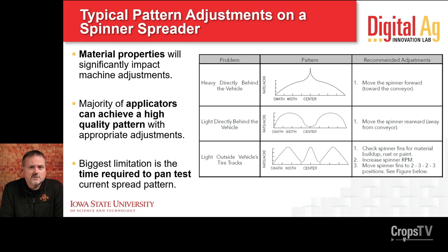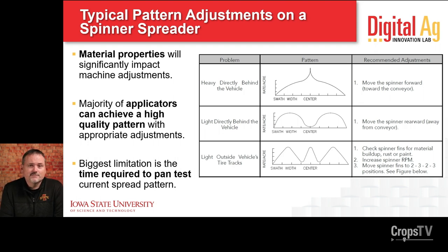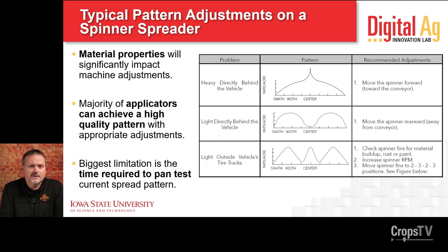Over the last handful of years we've seen all of these types of issues pop up within Iowa in terms of insurance claims or complaints about product quality and application. From a common perspective, the things that most commonly show up are something like the first pattern, where we're not able to spread material far enough. Maybe we're trying to spread a swath width of 100 feet but we can only get the fertilizer 90 feet, so there's a 10-foot gap between swaths with low application — that's been fairly common. Pattern issues directly behind the machine have also been fairly common and are just more visible today with the use of UAVs.